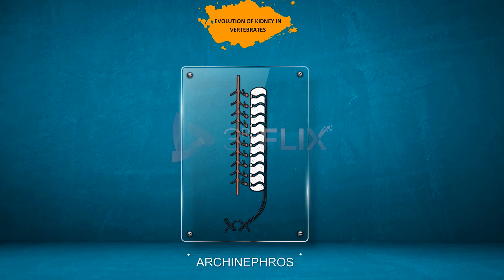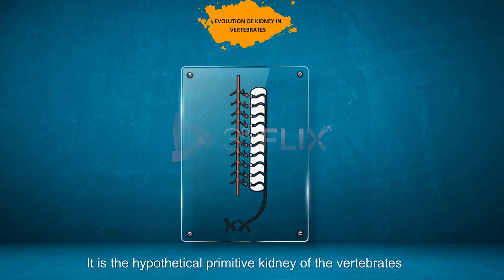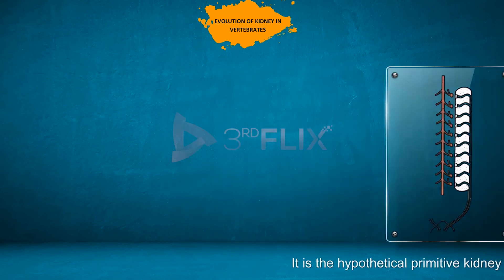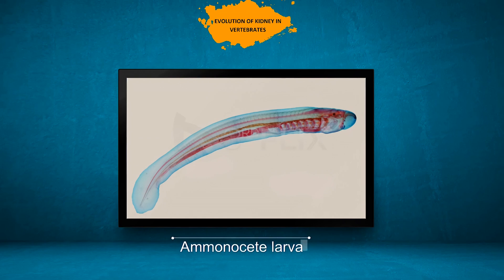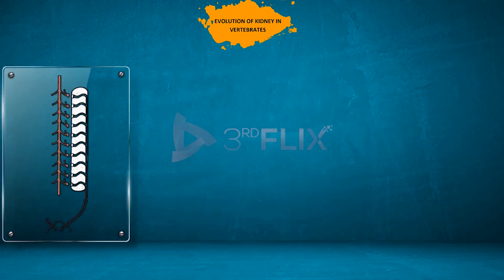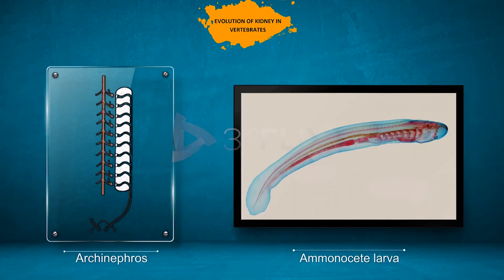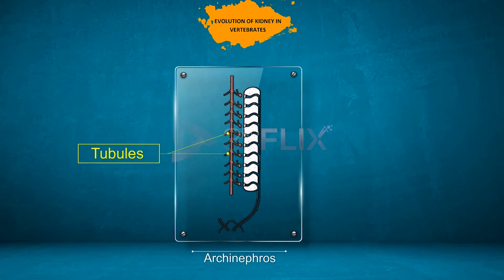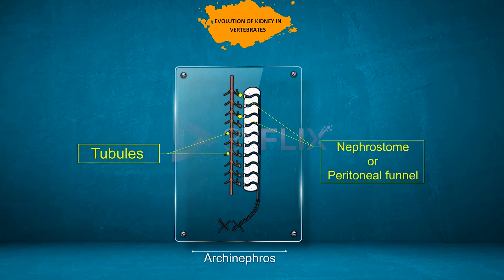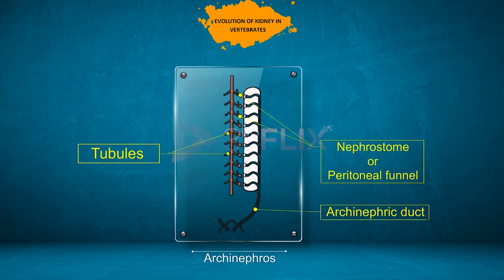Archinephros: it is the hypothetical primitive kidney of the vertebrates. It is found in the larval forms of some cyclostomes. It extends along the entire length of the coelom. The tubules are segmentally arranged. Each tubule opens into the coelom by a nephrostome or peritoneal funnel. All the tubules are drained by a common archinephric duct, which opens into the cloaca.